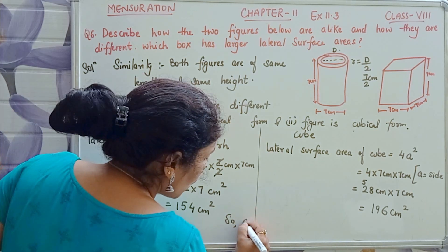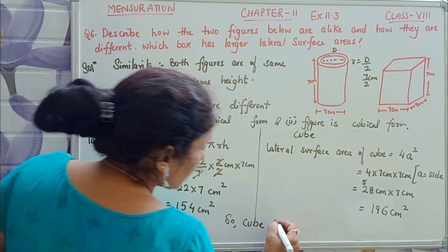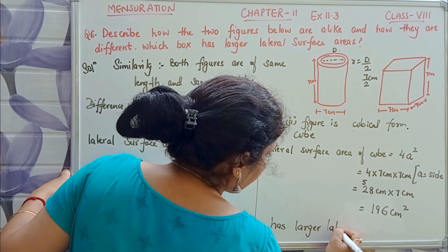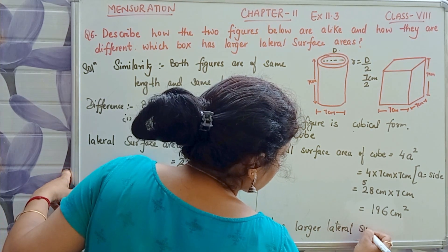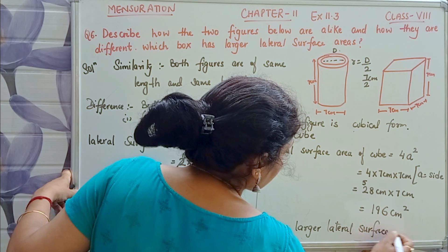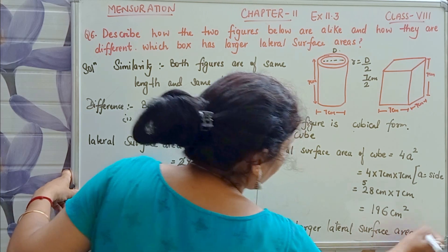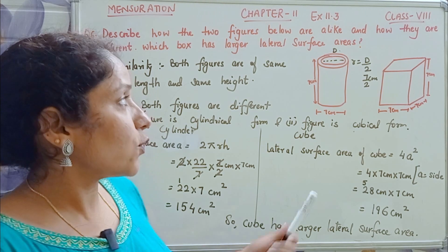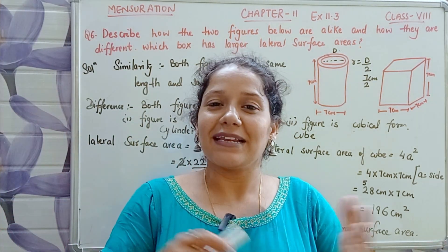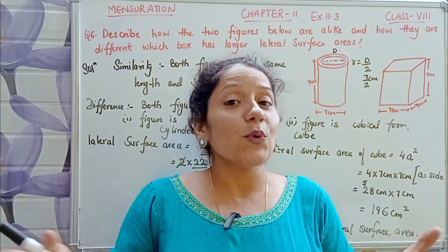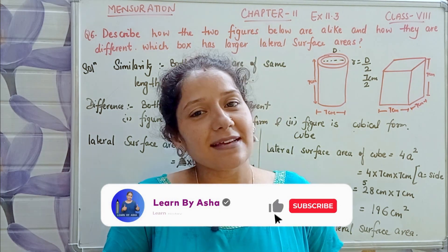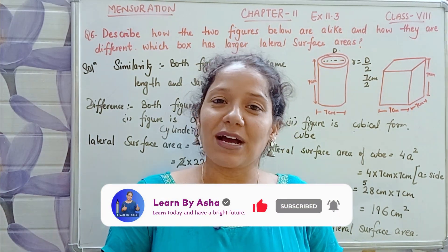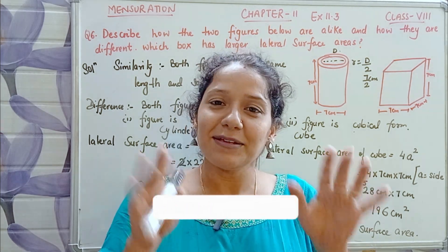So the cube has the larger lateral surface area. Hope this question is clear to you. Children, we will meet in the next video with the next question. Till then, take care, bye-bye.